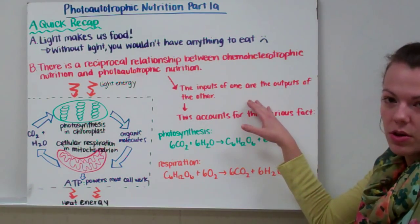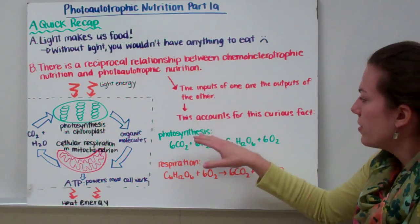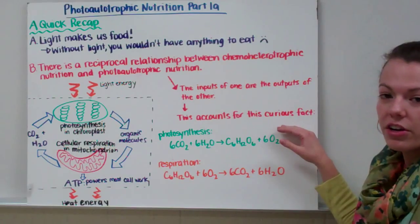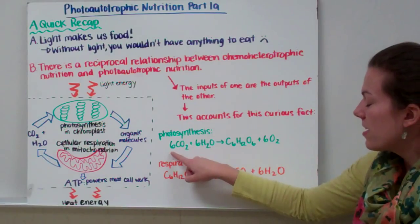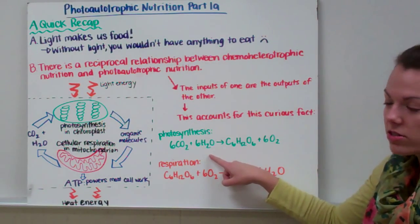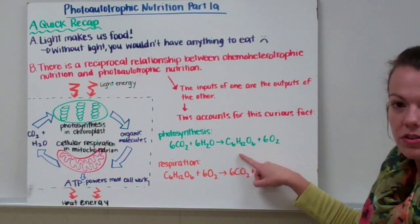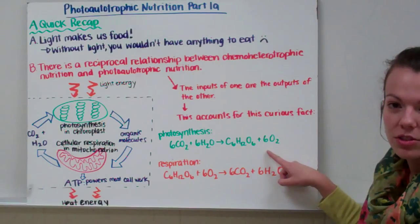The inputs of one, so inputs of photosynthesis, are the outputs of the other, cell respiration. This accounts for the curious fact that, if we look at the formula for photosynthesis, which is 6CO2, so six carbon dioxide, plus 6H2O, or six waters, yields C6H12O6, so a glucose or sugar molecule, and six oxygen molecules.